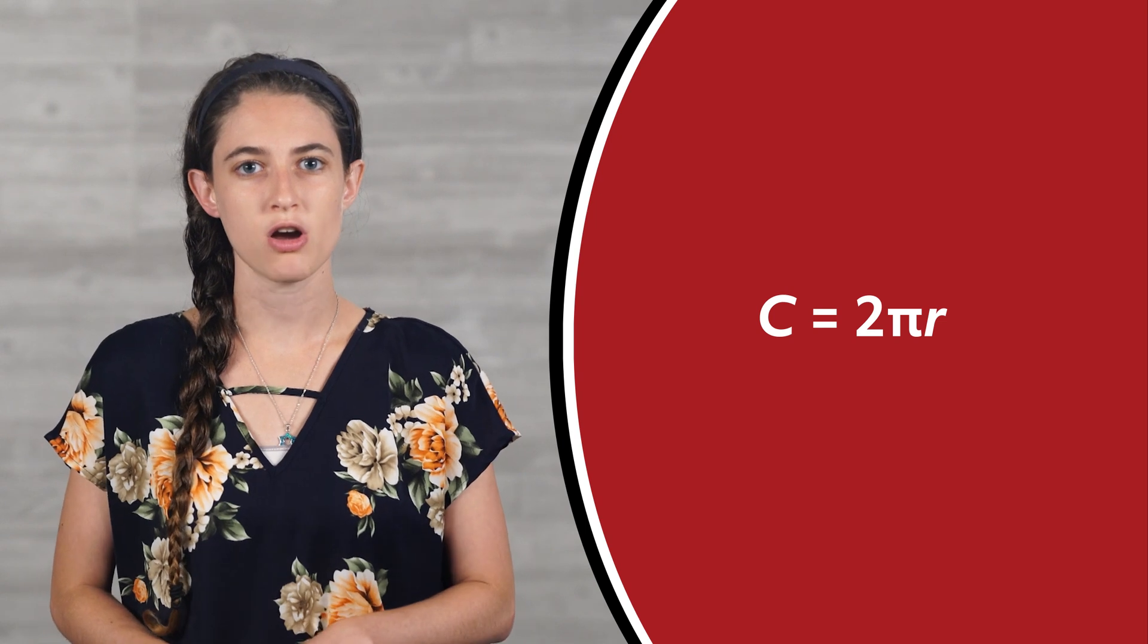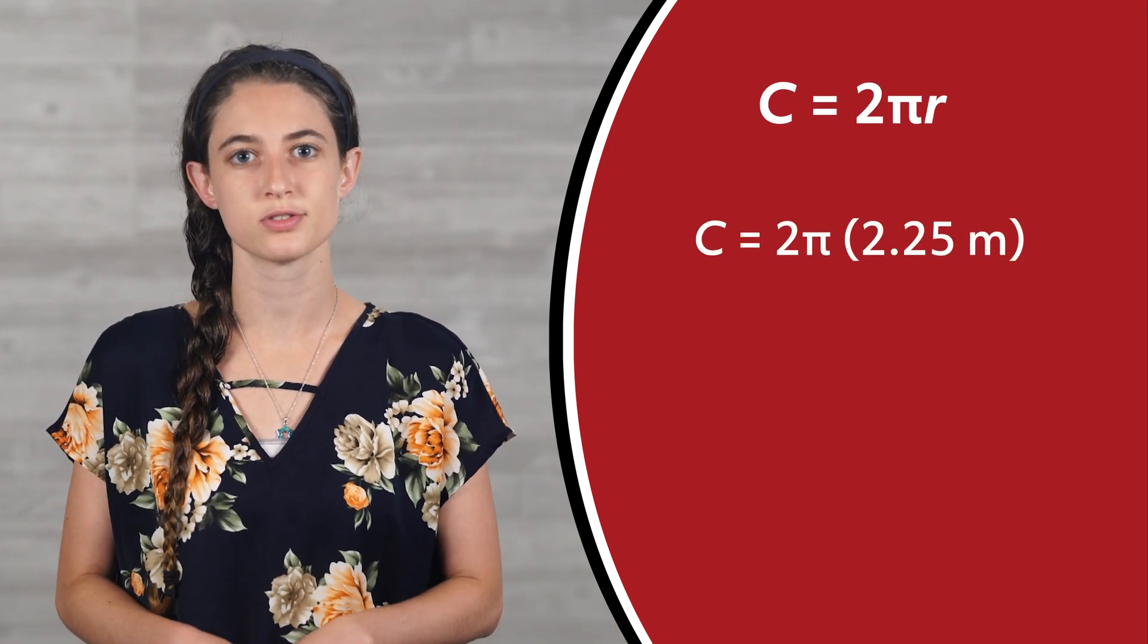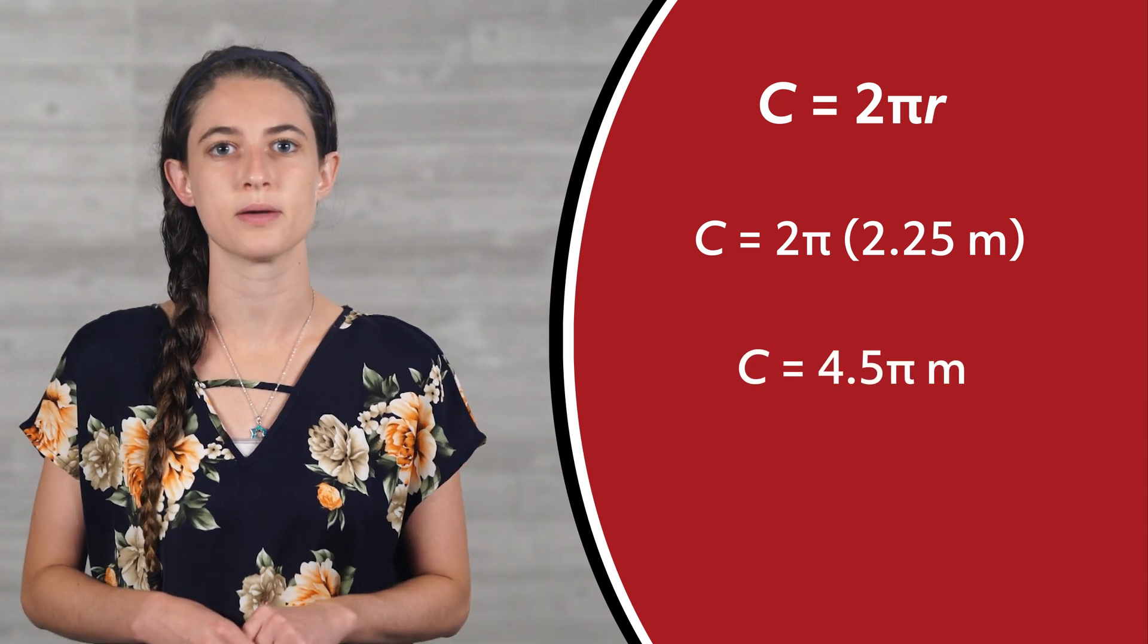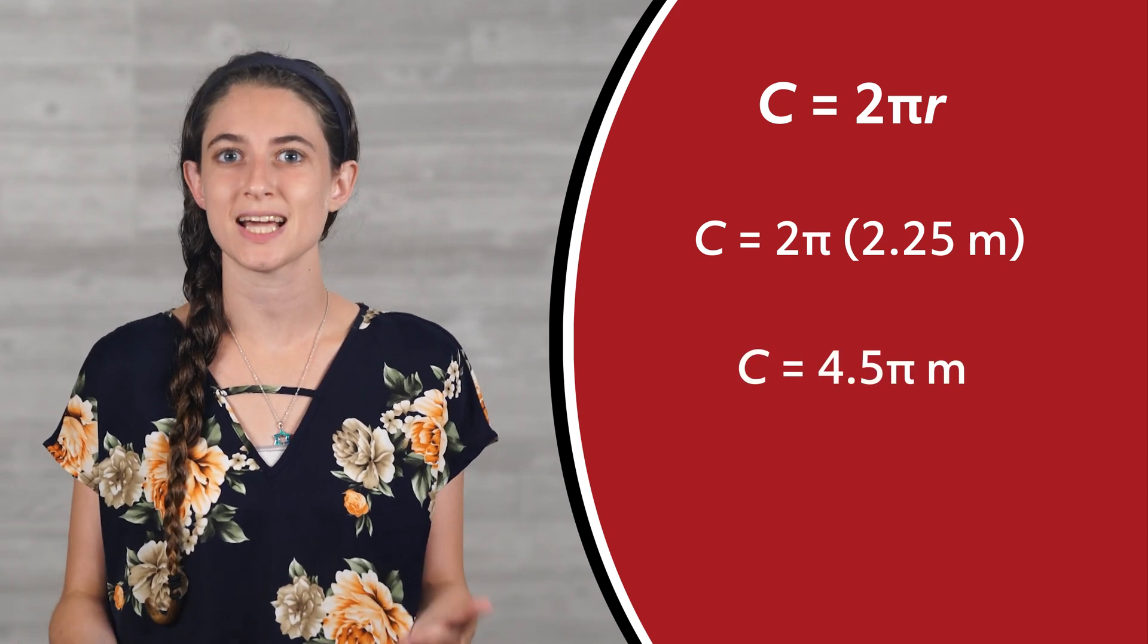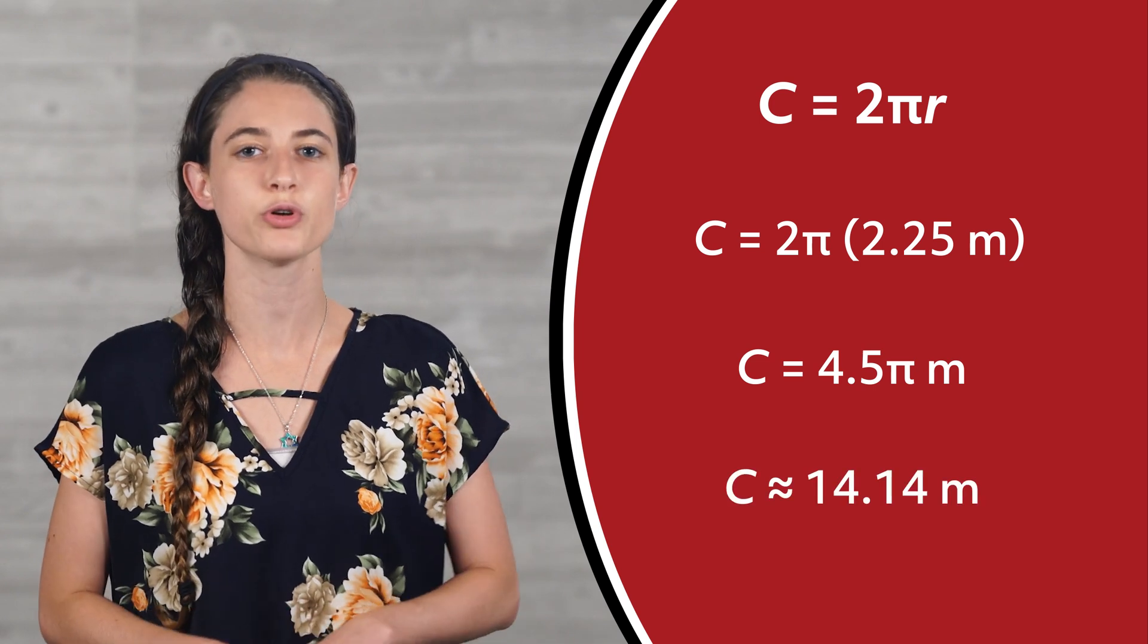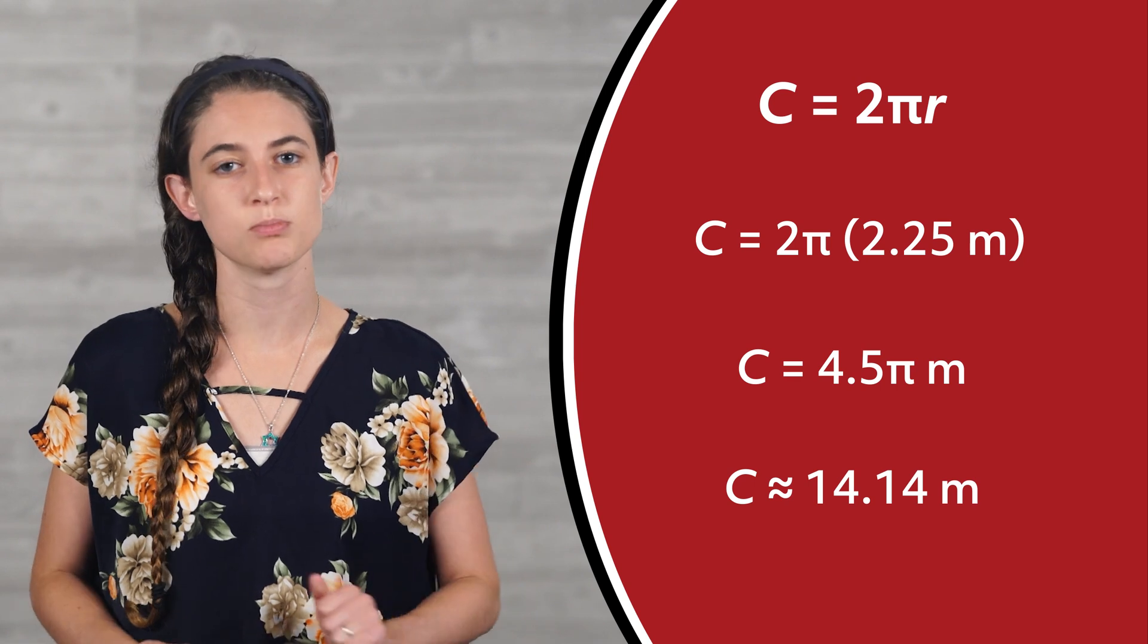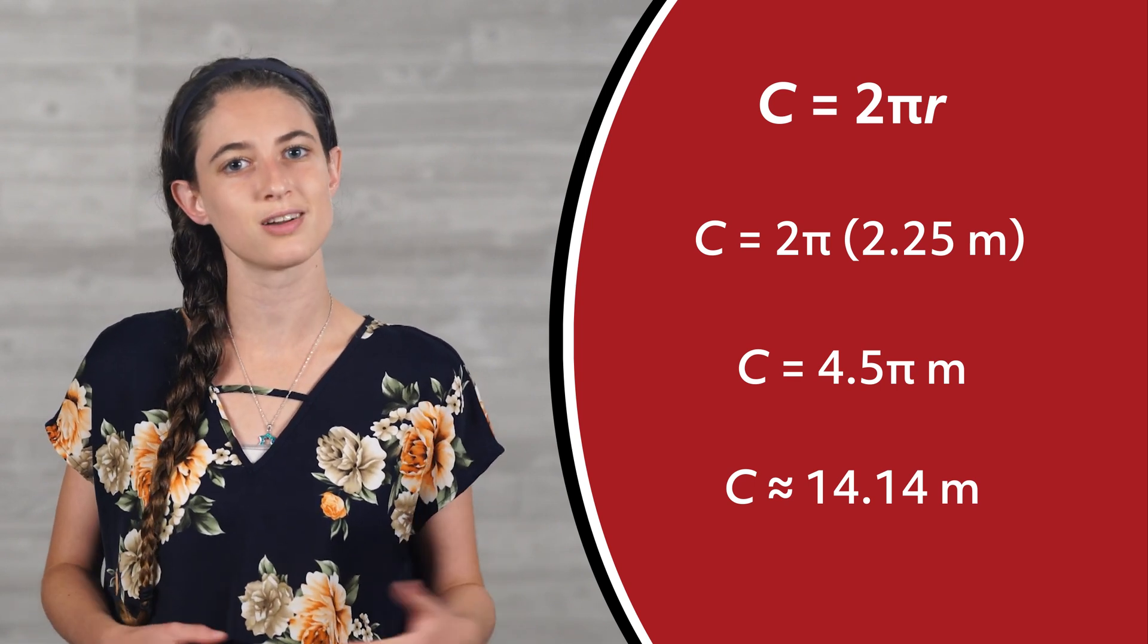Let's find the circumference. Circumference is equal to 2πr, so our circumference is equal to 2π times 2.25 meters, which is equal to 4.5π meters. Once again, we have our exact answer in terms of pi. Using our calculator, we get our approximate answer of 14.14 meters. We'll need to buy a roll of rubber edging that is more than 14.14 meters to maintain our clock.